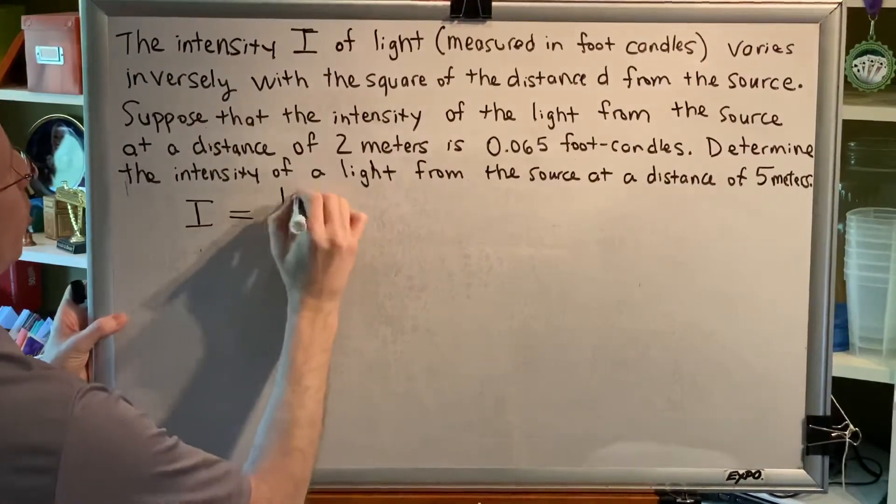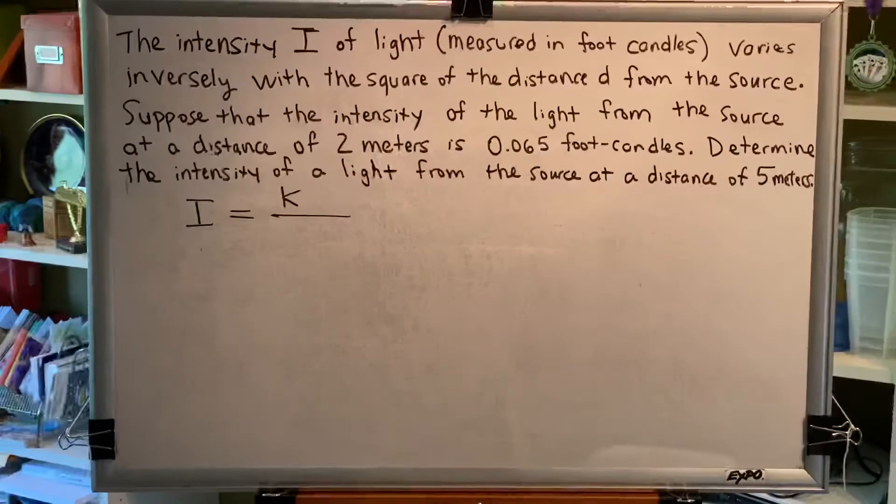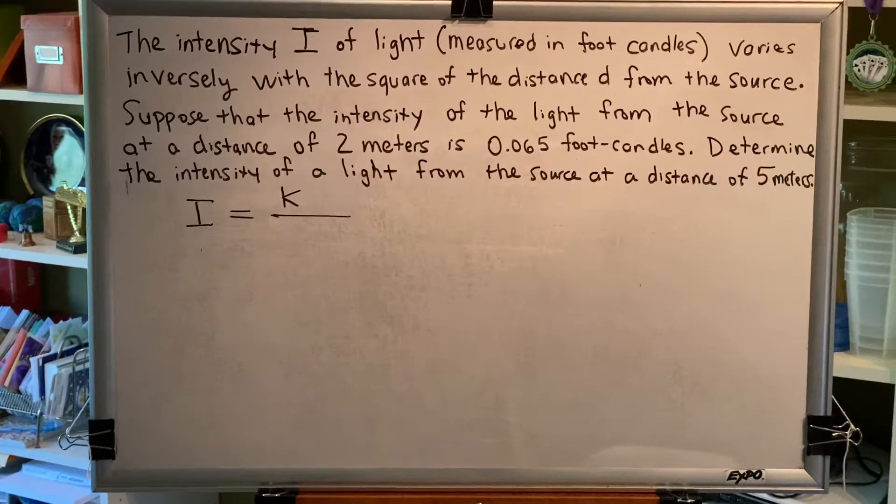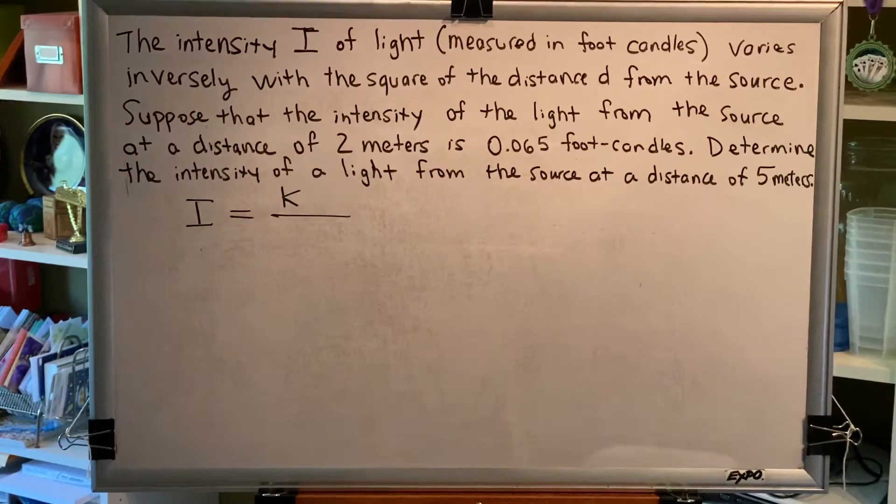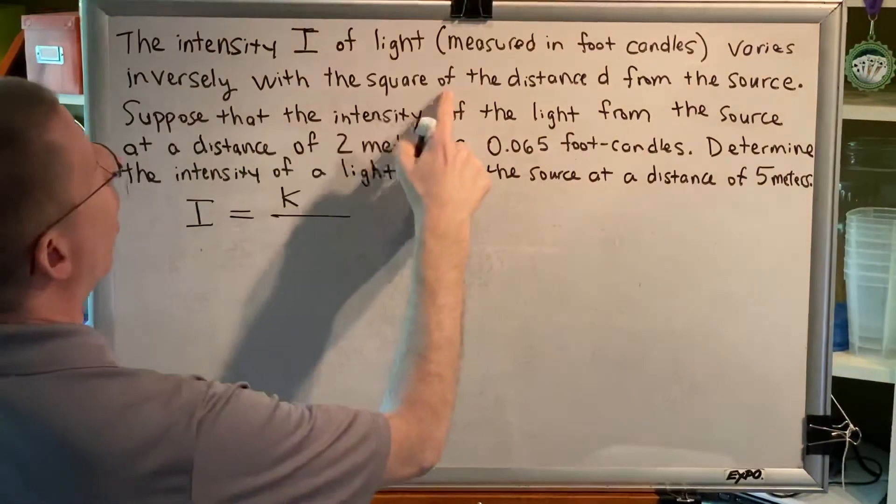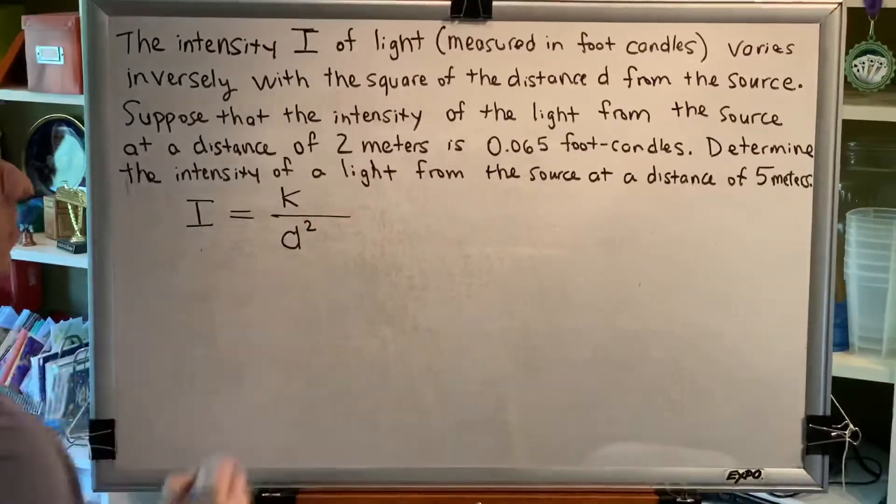Step 2 is to put K in the numerator of a fraction. Step 3 is to identify the L-Y word for this problem: jointly, inversely, or directly. Well, in this case, it says inversely. So, the quantity goes in the denominator. The square of the distance D. D squared goes in the denominator.